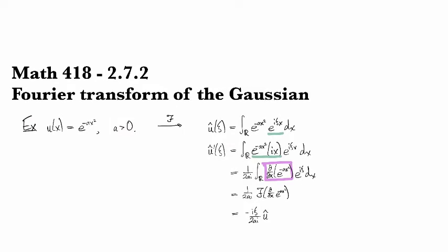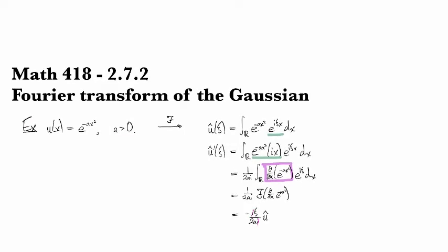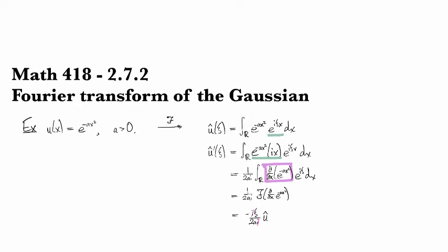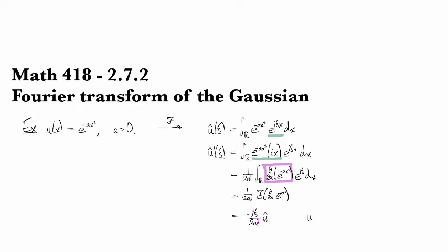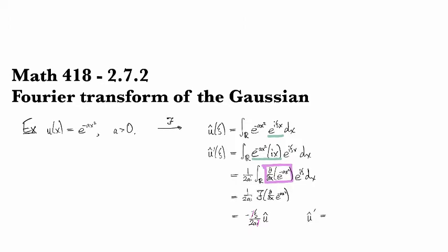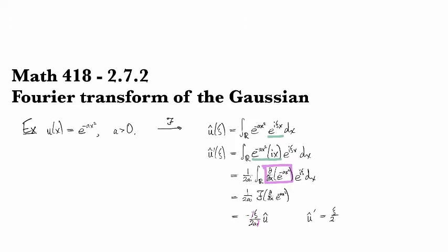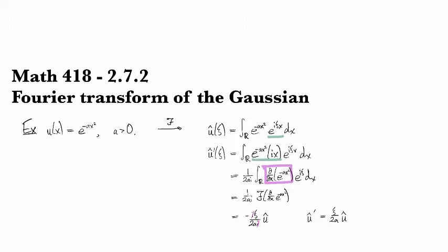So this gives us, we can cancel those i's, and we have that û prime is equal to ξ over 2a û.